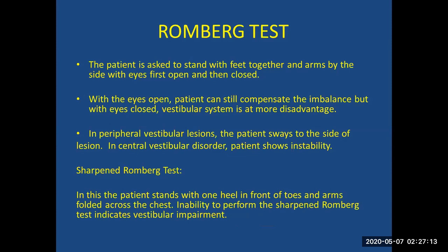Romberg's test: The patient is asked to stand with feet together and arms by the side, first with eyes open and then closed. With eyes open the patient can compensate for imbalance, but with eyes closed the vestibular system is placed at a disadvantage. In peripheral vestibular lesion the patient sways to the side of the lesion, while in central vestibular lesion there is constant instability. If the patient performs the standard Romberg test well, a sharpened Romberg test can be done — the patient stands with one heel in front of the toes and arms folded across the chest. Inability to perform this indicates vestibular impairment.